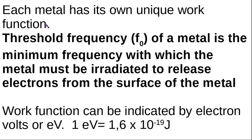Every metal that you look at has got its own unique work function. You get tables of values of the work function. But the work function is an energy, and energy of light is related to the frequency of light. So the threshold frequency of a metal is the minimum frequency with which the metal must be irradiated to release electrons from the surface of the metal. Irradiated just means to shine light on.